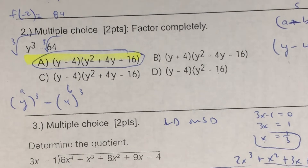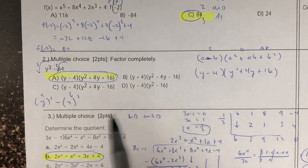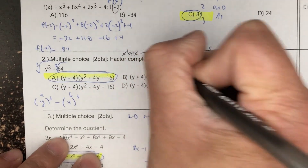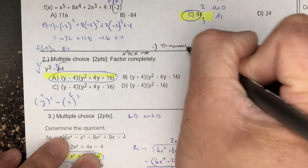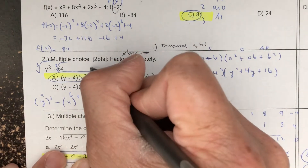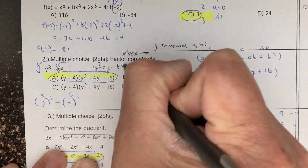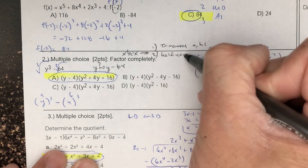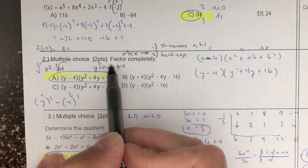Question number two tells you to factor completely. Remember, to use xbox, you have a couple of conditions. You have to have, number one, a trinomial, which means an A, B, and C value. So here you only have two terms, and even if you did add a placeholder, the second condition is that you have to have half of the exponent. Half of 3 is 1.5, and you don't have that there.